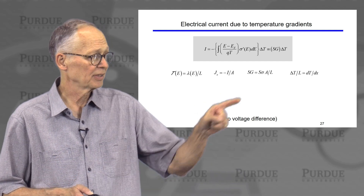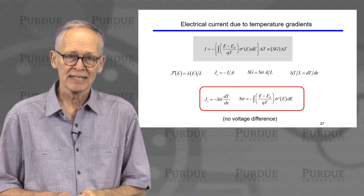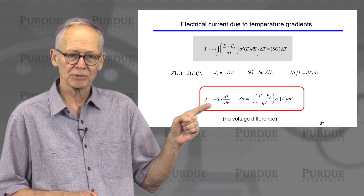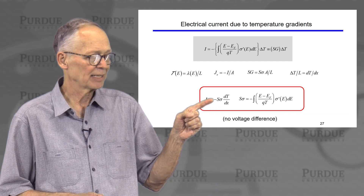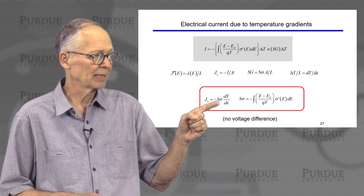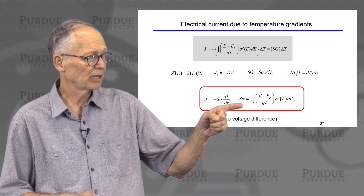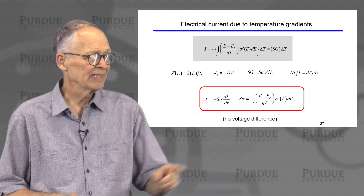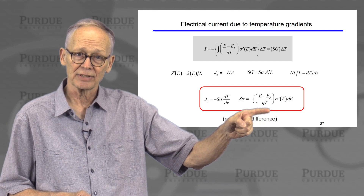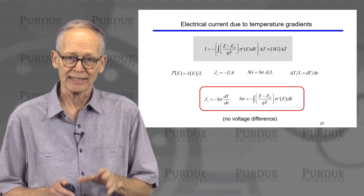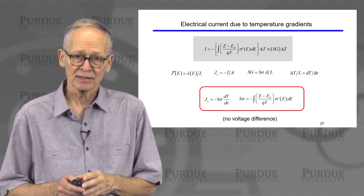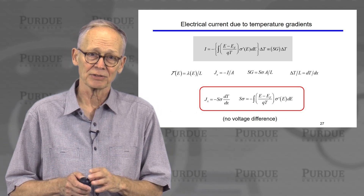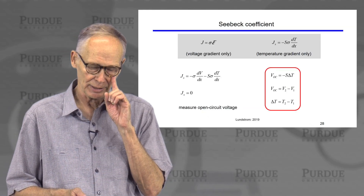Doing that, we convert this expression for the quantity S times G into a macroscopic bulk equation for the current flow. The current due to a temperature gradient is minus the Seebeck coefficient times conductivity times the gradient of the temperature. This product of the Seebeck coefficient times the conductivity comes directly from the Landauer expression. It is the differential conductivity weighted by energy with respect to Fermi energy, divided by the charge on an electron divided by temperature.